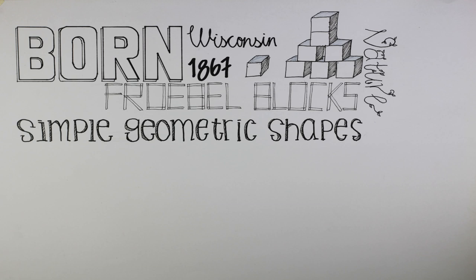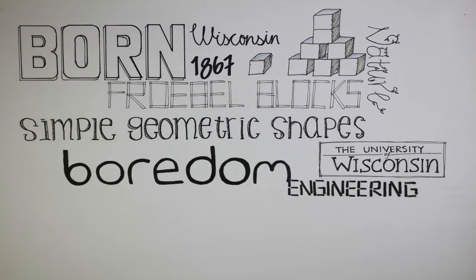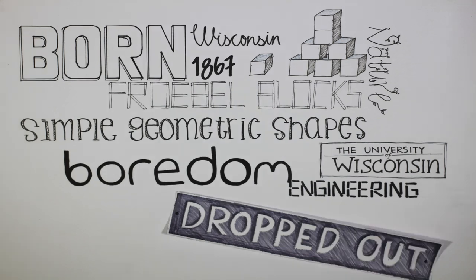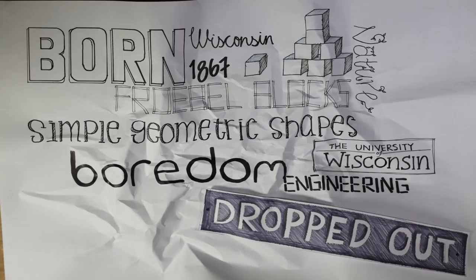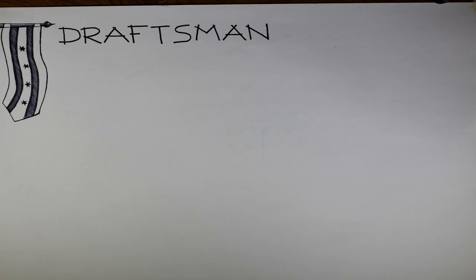After high school, Wright attended the University of Wisconsin and studied engineering because there were no architectural courses offered there. He gained hands-on experience via a part-time construction project at the University, but due to boredom, he dropped out during his first year. In 1887, at 20 years old, he moved to booming Chicago and acquired a job as a draftsman at the office of Joseph Lyman Silsby.